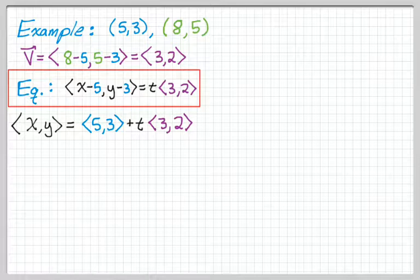For example, if t is 0, we get 5, 3 out of that equation. If t is 1, we get 8, 5 out of that equation. But we're going to deal with that in a second.